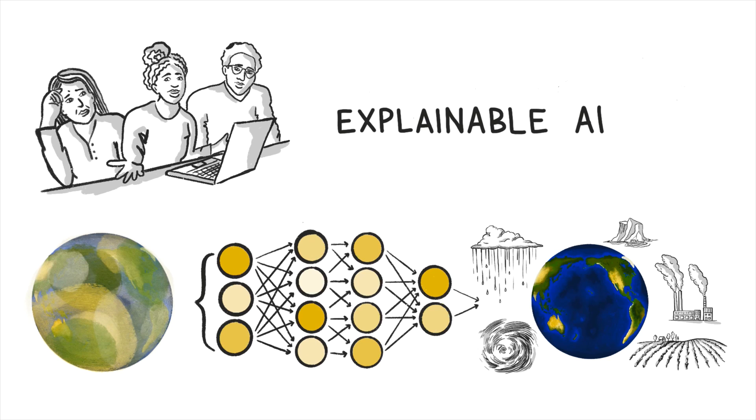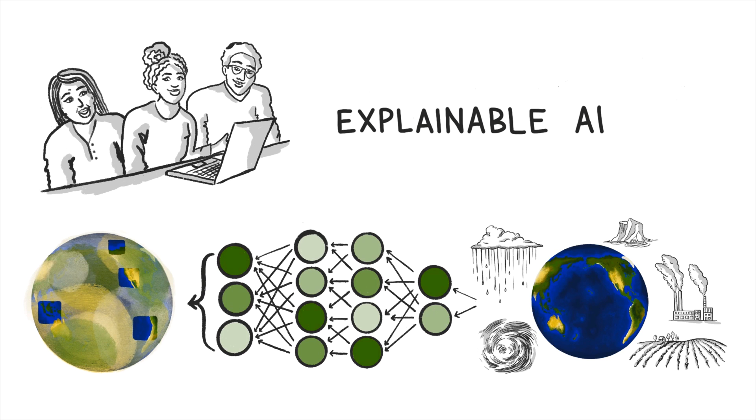These methods propagate information backwards through a network, starting with the prediction and deciphering the network's decision-making process along the way. This allows us to not only gauge the trustworthiness of the network's decision, but also uncover predictable climate signals we didn't know were there. That is, we can learn new science.